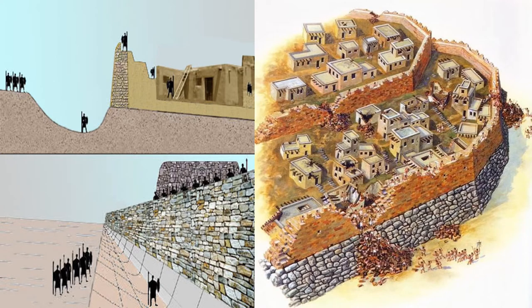Here are some reconstructions of what the walls of Jericho may have looked like. These walls were designed primarily to keep out enemy military forces. The residents of Jericho may have also dug moats around the walls. These moats probably did not contain water most of the year due to the climate's aridity, but they would have made scaling the walls more difficult.